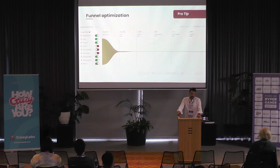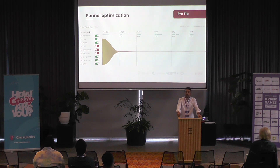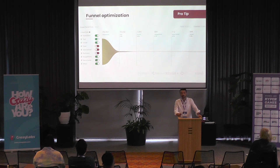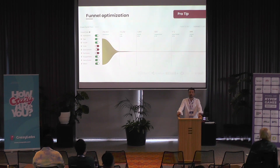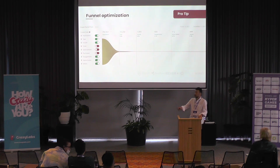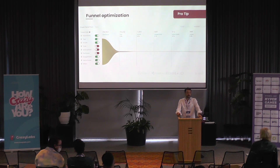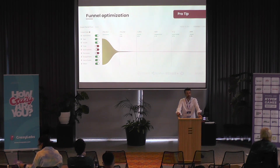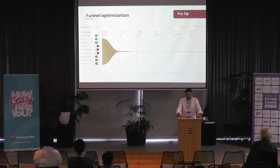The funnel works like this: someone sees your app (impressions), then some tap, then some download, then some open your app. After that, the engagement funnel starts — level completed events, or even ad revenue tracked through your MMP. You'll be able to see results throughout the funnel, and the system helps you detect which parts of your campaign are performing and which are not. This funnel optimization is quite important.